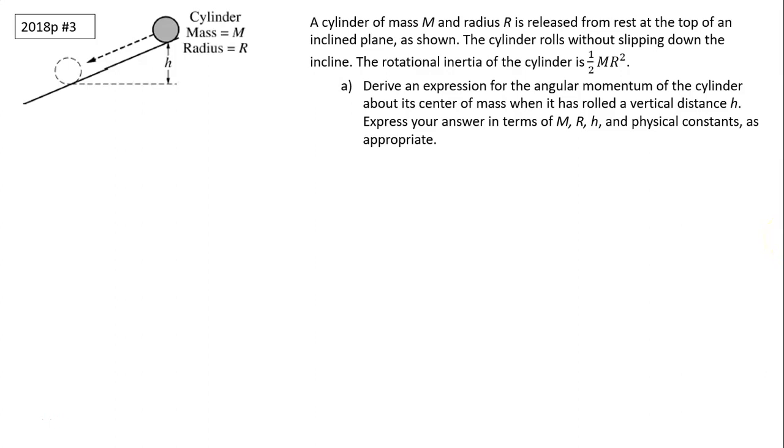Hi, this is Mrs. LaBarbera. This is AP Physics Mechanics C. Today, I want to go over an example of rotation. A cylinder of mass m and radius r is released from rest at the top of an inclined plane, as shown. The cylinder rolls without slipping down the incline.